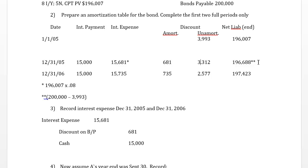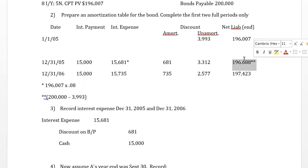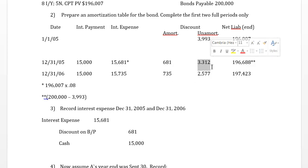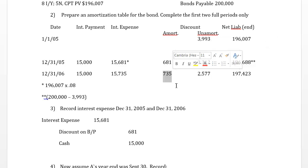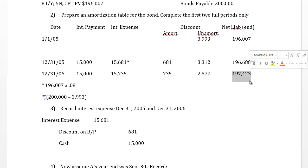The net liability is the $200,000 face value minus the unamortized discount, giving us $196,688 at end of 2005. We use that ending net liability to calculate interest expense for 2006, which gives an amortized discount of $735. Starting 2006 with $3,312 unamortized, amortizing $735 leaves $2,577 unamortized, so the net liability at end of 2006 is $197,423.